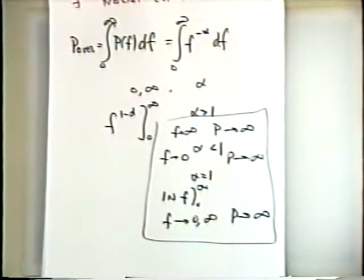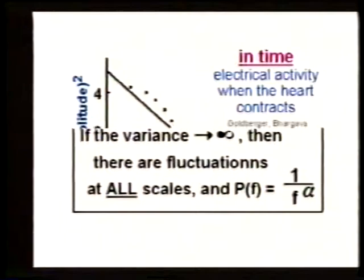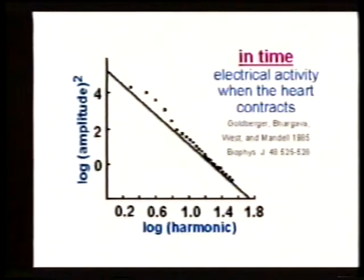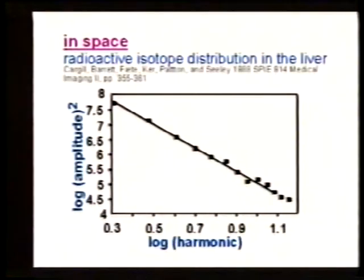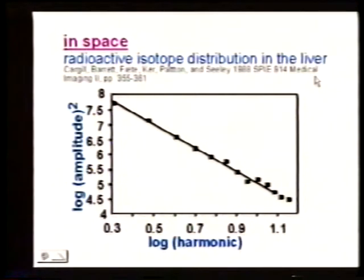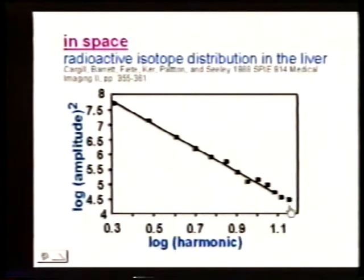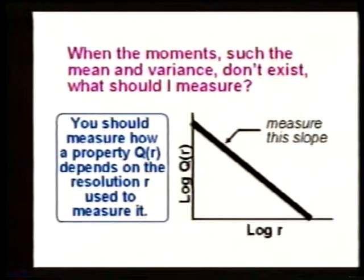This shows some examples. In time, this is the log of the amplitude of the power spectra versus frequency — a 1/f power spectrum for the QRS complex recorded in a heartbeat, which is electrical activity in the heart. This shows a power spectrum not in time but in space — a radioactive isotope deposited in the liver and then placed against photographic film, measuring the splotchiness of the radioactivity and where it's deposited in the liver. Again, the power spectrum has a power-law form, characteristic of this sort of fractal.